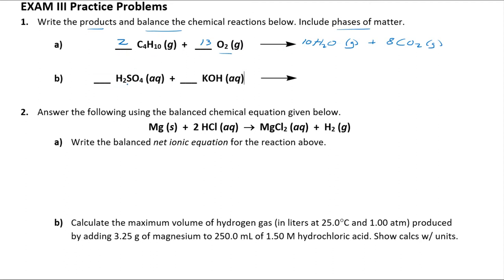Over here we've got sulfuric acid, which is one of your strong acids, and potassium hydroxide, which is a strong base. Strong acid plus strong base gives you a hint that this is a neutralization reaction, like the ones you did in lab. For neutralization you always get water as one product — liquid — and some kind of salt. Here you have potassium and sulfate, so the salt is K₂SO₄, which is aqueous since all potassium salts are soluble. Since we doubled potassium to balance the sulfate charge, that gives two KOH, two acidic hydrogens, and two waters. That's a balanced neutralization reaction.